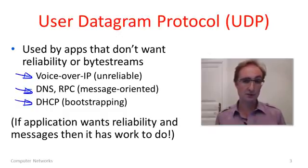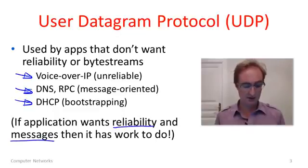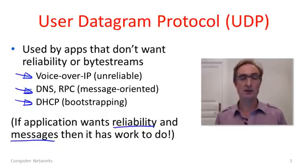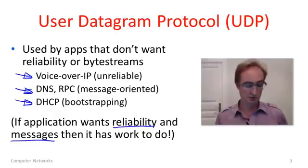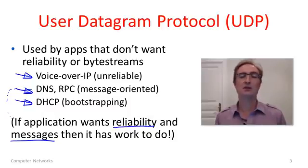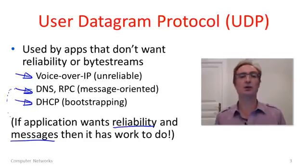From this list and reasoning, you can see that if an application wants both reliability and messages, then it has work to do. UDP gives you unreliable messages; TCP gives you a reliable byte stream. Reliable messages are somewhere in between. Protocols that want that, like DNS, must provide the reliability themselves as part of the application-level protocol. In that sense, TCP and UDP aren't a good fit to all applications.